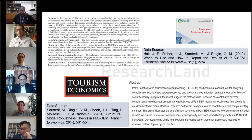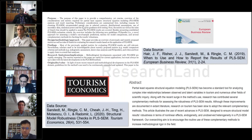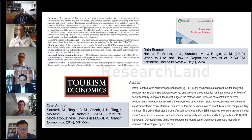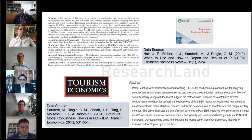For formative measurement models, there is a whole set of criteria: convergent validity, collinearity assessment, and the significance and relevance of outer weights. Once the measurement models are confirmed, you move on to the structural model. In the structural model, you look at collinearity among constructs, the significance and relevance of relationships, and predictive relevance. For in-sample predictive relevance you look at R-square values and effect sizes; for out-of-sample predictive relevance you use PLS predict and Q-square values.